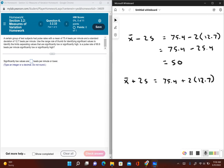So it would be 2 times 12.7, so this gives us 75.4 plus 25.4. This is going to give us 100.8.